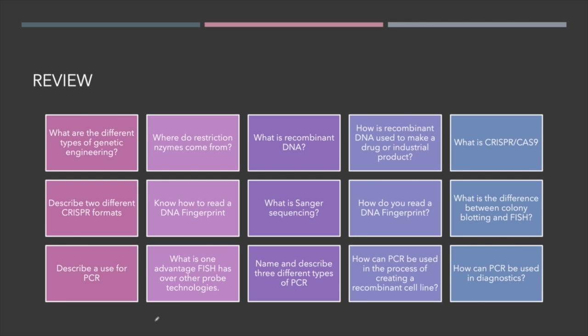So this was a pretty big chapter, although it seems really short in the book — there was certainly a lot of relevant and important information within it. Here are some review questions to consider: What are the different types of genetic engineering? Where do restriction enzymes come from? What's Sanger sequencing? How can PCR be used in the process of creating a recombinant cell line? Imagine that you're in a laboratory doing research on COVID-19 or the flu virus or a bacterial infection — which of these tools would you use and how could you use some of them together? How could you take electrophoresis, Sanger sequencing, and DNA probes and put those different tools together to discover something about the organism you're researching?